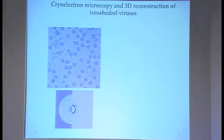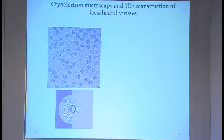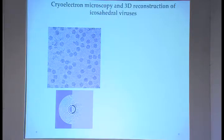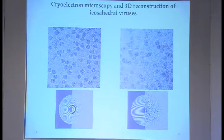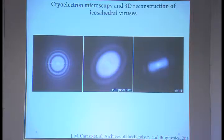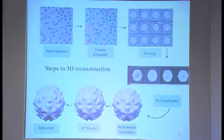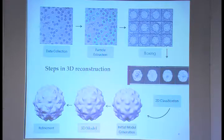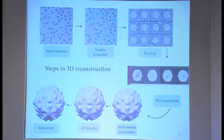The viruses are frozen quickly in vitreous ice and you look at the pattern of Thon rings to identify good particles. You need nice Thon rings for CTF correction, and must address astigmatism and drift. The process involves boxing images, assigning orientations, 2D classification, initial model generation, and refinement to get structural features. This process is more or less fairly standardized.